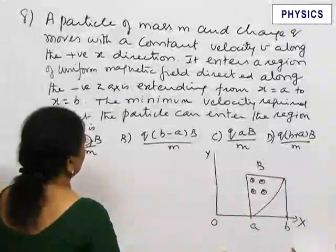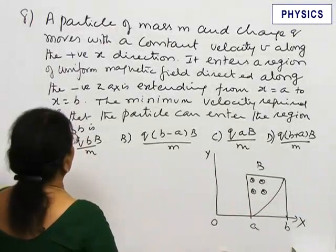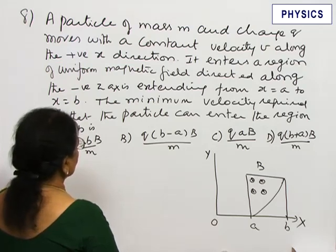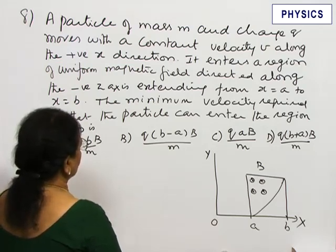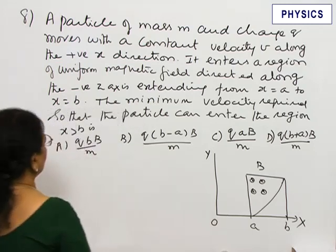Problem 8: A particle of mass M and charge Q moves with a constant velocity V along the positive X direction. It enters a region of uniform magnetic field directed along the negative Z axis, extending from X equals A to X equals B.